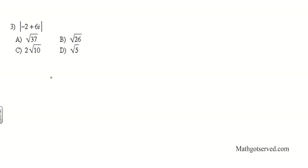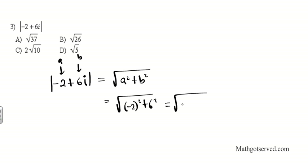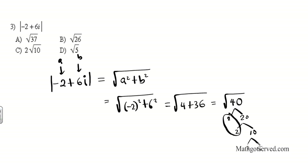Let's move on to number 3: what is the absolute value of negative 2 plus 6i? Same process — we use the Pythagorean theorem, taking the square root of a squared plus b squared, where a is the real part and b is the imaginary part. Substituting, we get the square root of negative 2 squared plus 6 squared, which becomes the square root of 4 plus 36, equaling the square root of 40. Taking out prime factors: 40 gives 2 and 20, then 2 and 10, then 2 and 5. The two repeated 2-factors come out as a single 2, leaving 2 and 5 inside, so the square root of 40 becomes 2 root of 10. The answer to number 3 is 2√10.